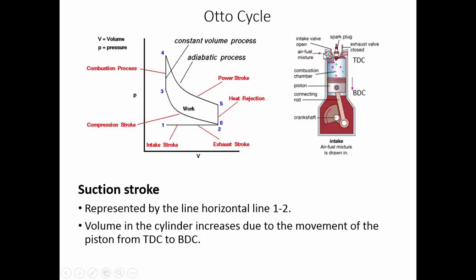During the suction stroke, the air-fuel mixture enters the cylinder with the intake valve open and the exhaust valve closed. The piston traverses from the top dead center to the bottom dead center, so the volume inside expands. This is represented by the path from point 1 to point 2 in the Otto cycle diagram. The least volume is at the top dead center (point 1), increasing until the piston reaches the bottom dead center (point 2). The volume increases without any increase in pressure.